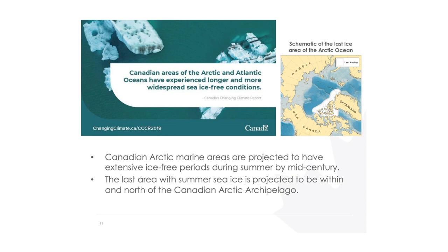Arctic sea ice has been declining over the period of observation, particularly since detailed satellite observations began in 1979, decreasing at a rate of about 10% per decade. Looking into the future, as sea ice continues to decline, the last area to retain summer sea ice will be in northern Canada — the Canadian Arctic Archipelago north of Greenland. But by about mid-century, projections are that the more southern Canadian Arctic and much of the Russian Arctic will be ice-free in summer.